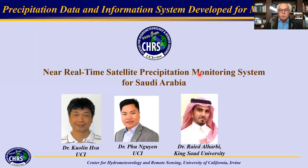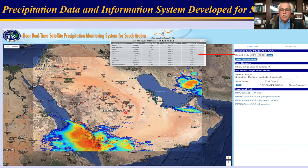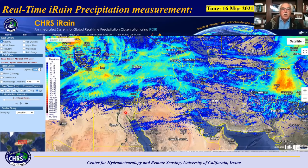We were happy to have Dr. Raeed Al-Harvey, now an assistant professor at King Saud University, as a graduate student in our program. At that time, we had a project funded by the Ministry of Water Resources and Agriculture, and we developed a tool for Saudi Arabia. Raeed calibrated the system against all the gauge information provided, and it was delivered to the Ministry. At present, we are discussing and hoping to continue our work of calibrating, updating, and maintaining the system for the Kingdom.